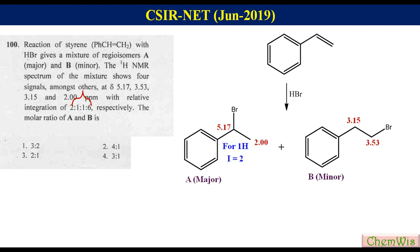In product B the signal at 3.53 ppm is for two protons with the relative intensity 1. So for one proton it will be equal to 0.5.